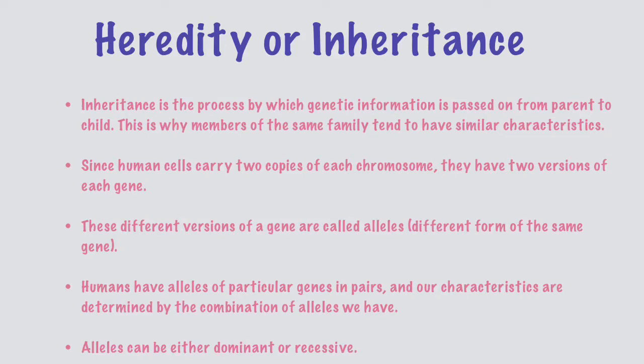In humans, human beings carry two copies of each chromosome and have two versions of each gene. We carry two copies of each chromosome, and there are two versions of each gene. These two different versions are called alleles. Alleles are different forms of the same gene. Humans have alleles of particular genes in pairs, and our characteristics are determined by the combination of alleles we have.